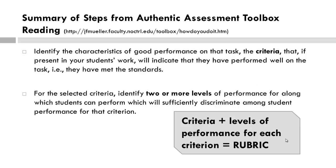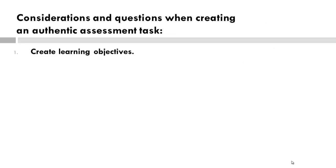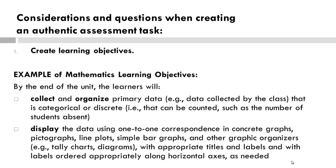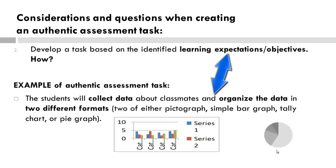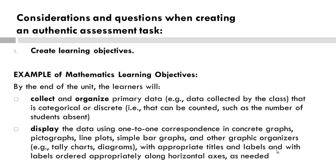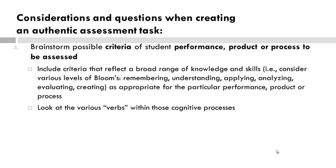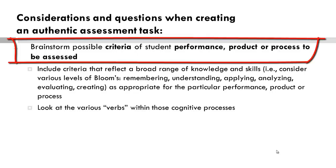Criteria and levels of performance for each criterion form your rubric, but it is much easier said than done. So we start with the identified learning objectives of the task, performance, or final product to be assessed. Remember to refer to a variety of cognitive processes if the task reflects a cognitive task. Pause and read these objectives that will serve as an example for our rubric. Based on the learning objectives, the students will collect data about classmates and organize data in two different formats.